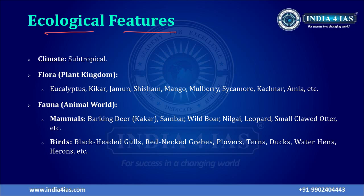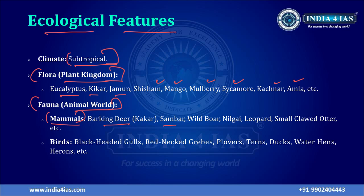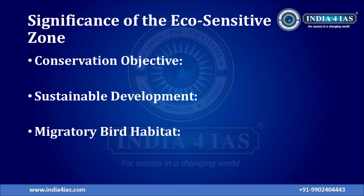Regarding the ecological features of Pong Dam Wildlife Sanctuary: climatologically it is a subtropical area. The flora includes eucalyptus trees, kikar, jamun, shisham, mango, mulberry, sycamore, kashnar, and amla. The fauna includes mammals such as barking deer, sambar, wild boar, nilgai, leopard, and small-clawed otter, and birds such as black-headed gulls, red-necked grebes, terns, and ducks.